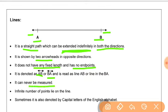Infinite number of points lie on the line because a line is a collection of points. Sometimes it's denoted by capital letters of the English alphabet such as A, B.